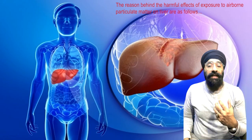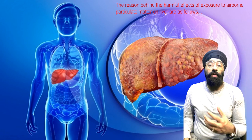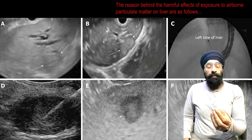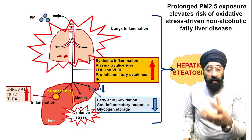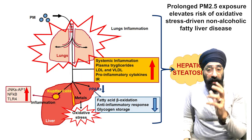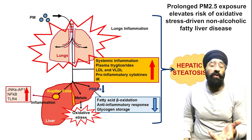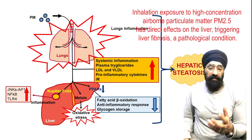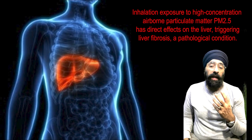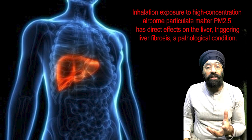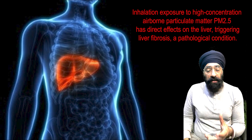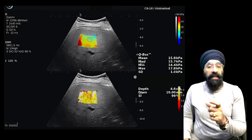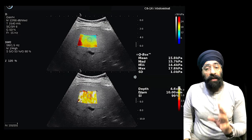The reasons behind the harmful effects of exposure to airborne particulate matter on the liver are as follows. Prolonged PM 2.5 exposure elevates the risk of oxidative stress-driven non-alcoholic fatty liver disease, and inhalation exposure to high concentrations of air particulate matter PM 2.5 has direct effects on the liver, triggering liver fibrosis, which is a pathological condition.